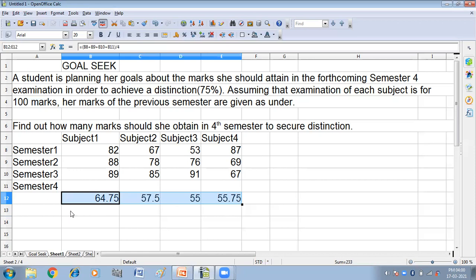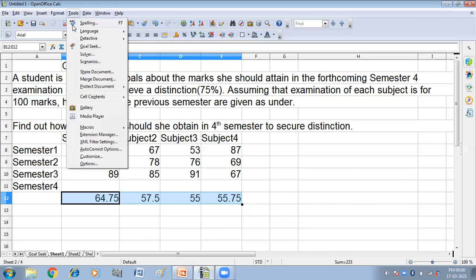Now we want to achieve 75%. So, what we will do, this is my formula cell or the target cell. Click on the Tools menu and click on Goal Seek option.